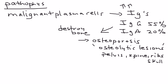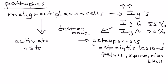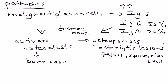Why does this bone destruction happen? The reason is because these malignant plasma cells activate osteoclasts. And osteoclasts, as most of you know, are responsible for bone resorption.